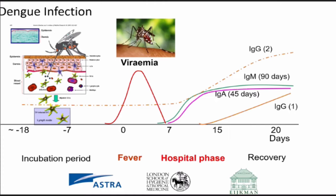We get the virus from an infected mosquito. It transmits the virus into your blood, and probably there's a little bit of virus replication at the site of the mosquito bite. The virus then moves into your bloodstream and you end up with this viremia about a few days later, up to a week later.